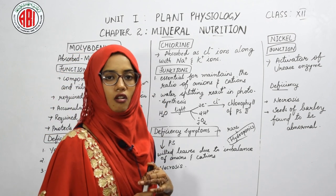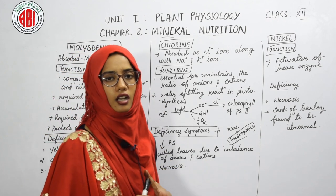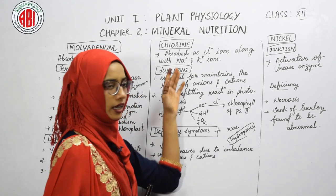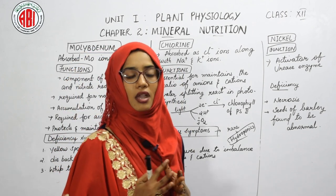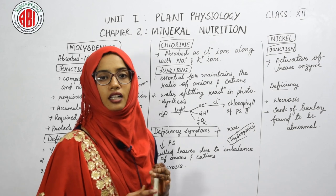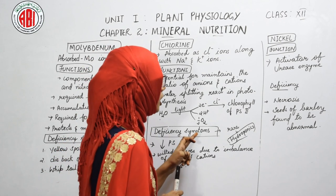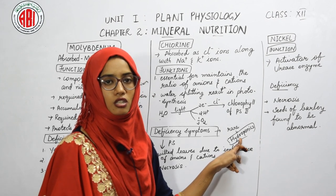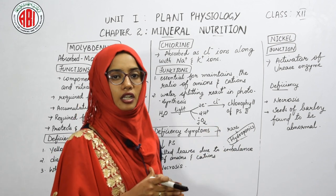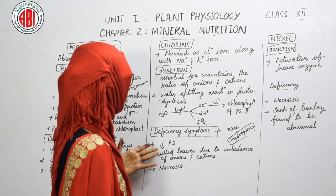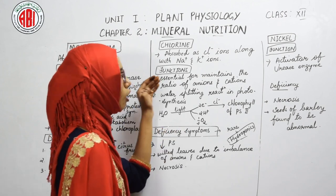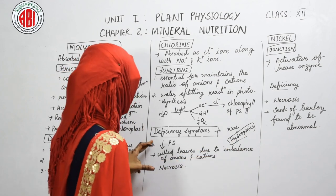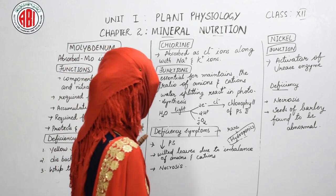Deficiency symptoms of chlorine are very rare, because many salts in the soil contain chloride ions. However, using the technique of hydroponics — growing plants in a nutrient medium without soil — we have been able to identify some deficiency symptoms of chlorine.